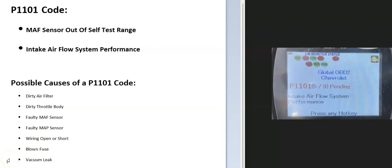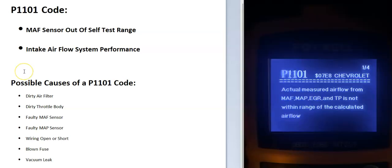Today I'm talking about a P1101 code — what it is and how you go about fixing it. Depending on the scan tool you're using, it could come up with different definitions. The most common one is 'intake airflow system performance,' but it can also come up as 'MAF sensor out of self-test range,' or 'actual measured airflow from MAF, MAP, EGR, and TP is not within range of calculated airflow.' Basically, the onboard computer is having an issue with the air going into the engine.